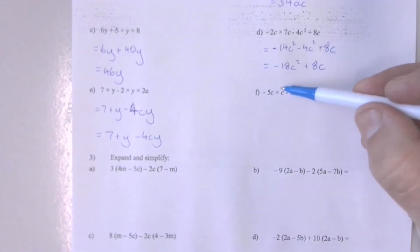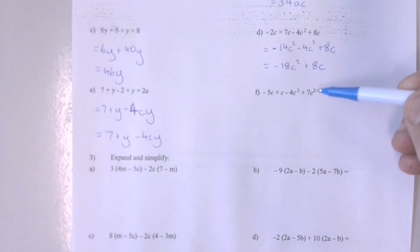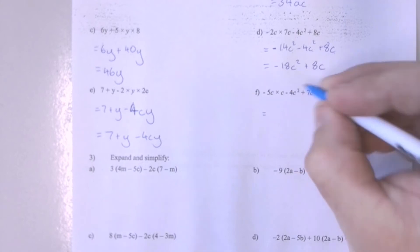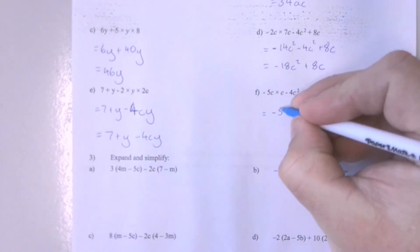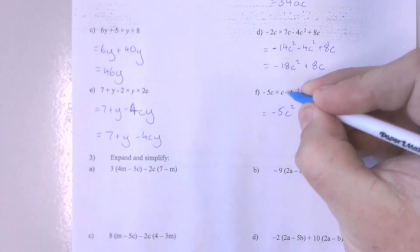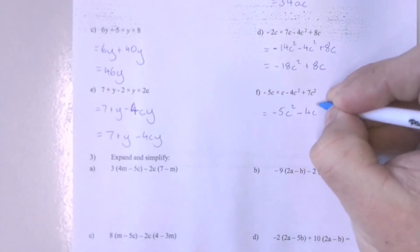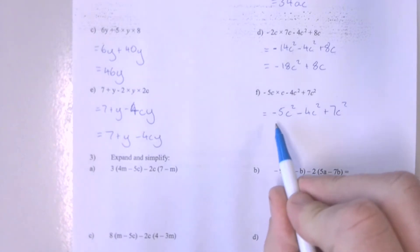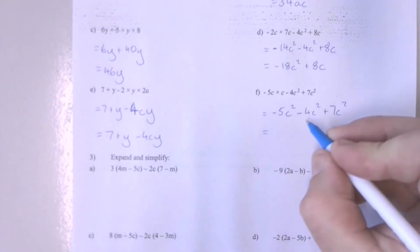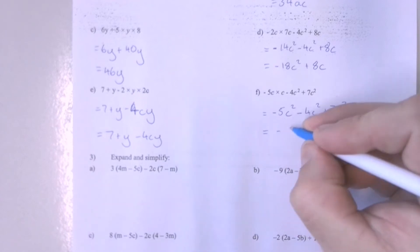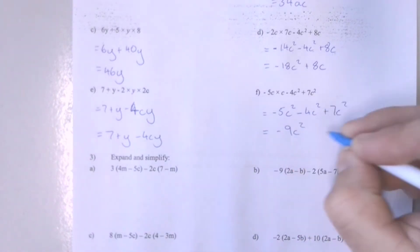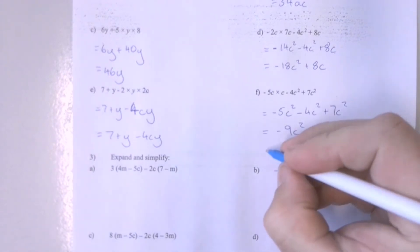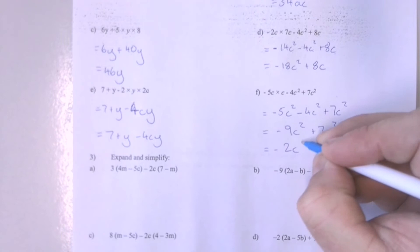Question 1F has got multiplication, subtraction, and addition. Let's do the multiplication first. I've got minus 5 times 1 making minus 5C squared — that's C times C — subtract 4C squared, add 7C squared. If I've got minus 5 minus 4, that makes minus 9C squareds plus 7C squareds. And minus 9 plus 7 makes minus 2C squareds.